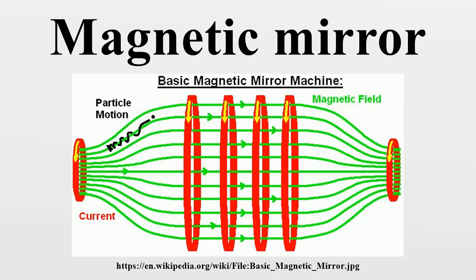Magnetic mirrors play an important role in other types of magnetic fusion energy devices such as tokamaks, where the toroidal magnetic field is stronger on the inboard side than on the outboard side. The resulting effects are known as neoclassical.